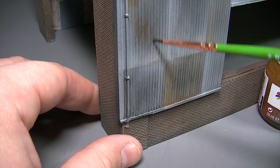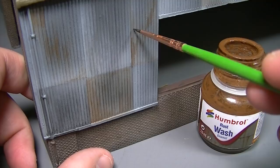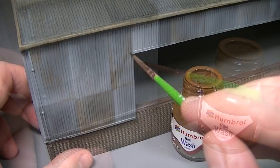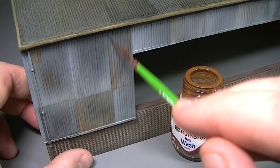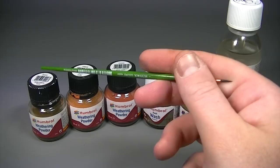As we work our way around the model now and apply washes over the top of the filters that we applied earlier you'll see that the colour starts to become more bold and the effect less subtle. For some modelers this may be the extent of weathering that they want to achieve and now would be a good time to call it a day happy with the results that we've achieved using Humbrol enamel washes on their own.